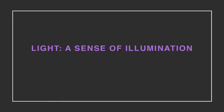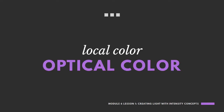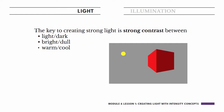Remember that light is defined as a sense of illumination. We're going to get the strongest sense of light when we move away from using local color — the physical color of the object — to using optical color, which is our perceived color. The key to creating a strong sense of light is creating strong contrast between light and dark (value), bright and dull (intensity), and warm and cool (temperature). Our focus in this module is going to be on the intensity factor — the brightness and dullness of the color.